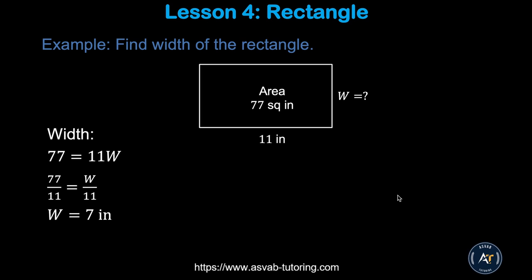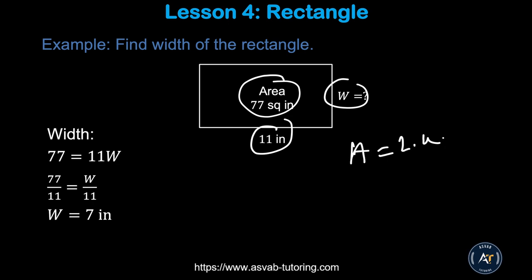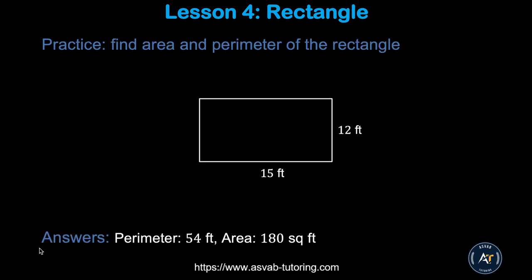Here is another problem where the area is given as 77 and one side is 11. You know that area equals length times width, so width equals area divided by length, which gives you width equals 7 inches. This is a practice problem — pause the video and try by yourself. Make sure you get 54 for the perimeter and 180 for the area.